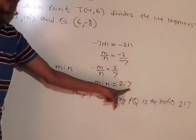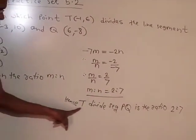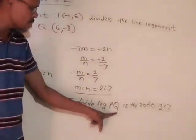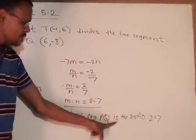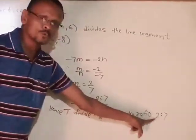That is m:n = 2:7. Hence T divides segment PQ in the ratio 2:7.